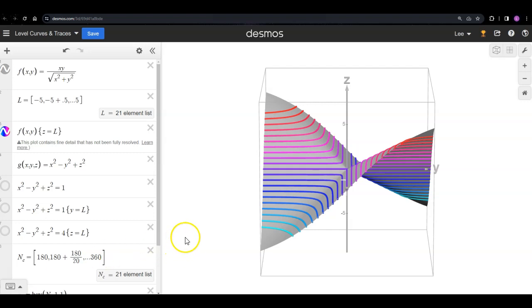What I have showing here right now is a particular surface, f(x,y) is x times y over square root of x squared plus y squared. This looks sort of saddle-y but has kind of a ridge that runs down the middle.